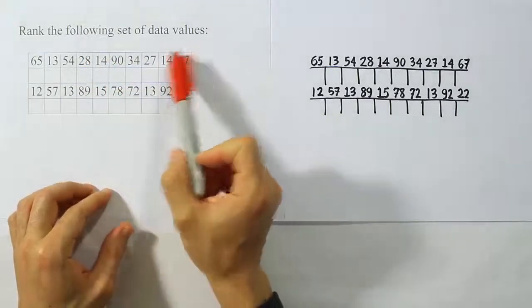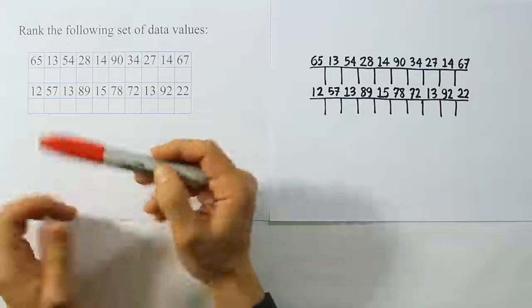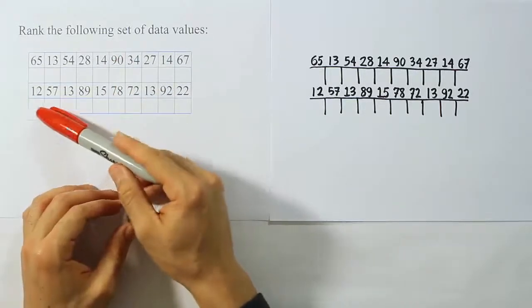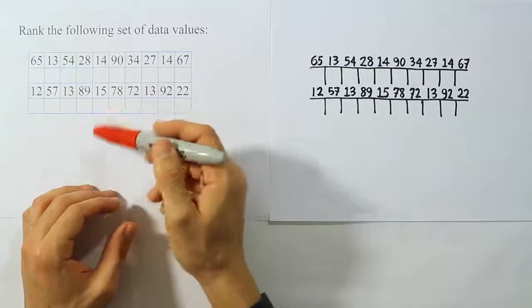Rank the following set of data values. Okay, so what we want to do is basically take the smallest data value and give it rank 1. The next smallest data value will get rank 2.